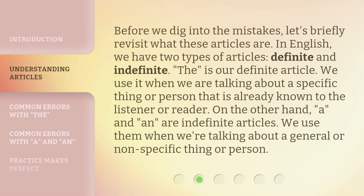Before we dig into the mistakes, let's briefly revisit what these articles are. In English, we have two types of articles: definite and indefinite. 'The' is our definite article — we use it when we are talking about a specific thing or person already known to the listener or reader. On the other hand, 'a' and 'an' are indefinite articles — we use them when we're talking about a general or non-specific thing or person.